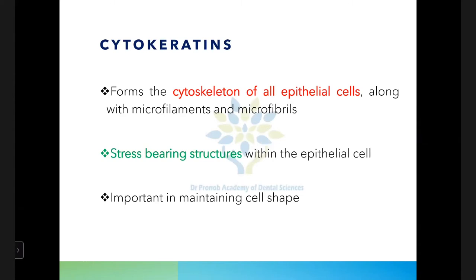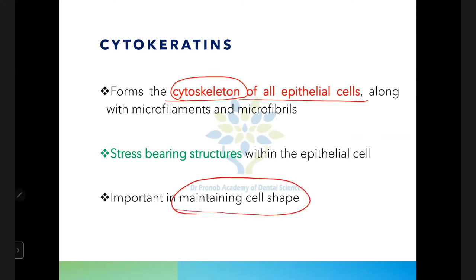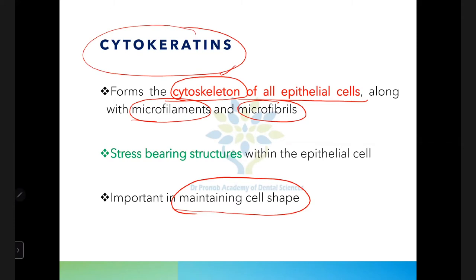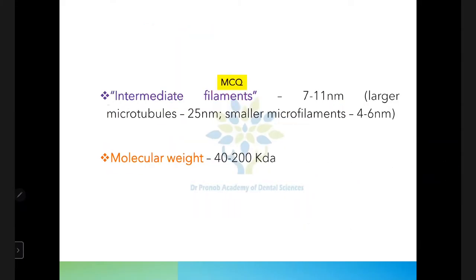Cytokeratins form the cytoskeleton of epithelial cells and are important for maintaining cell shape. Together with microfilaments and microfibrils, they bear stress and are responsible for the process of keratinization. Cytokeratins are called intermediate filaments because their diameter is 7–11 nanometers, which is between that of microtubules and microfilaments.